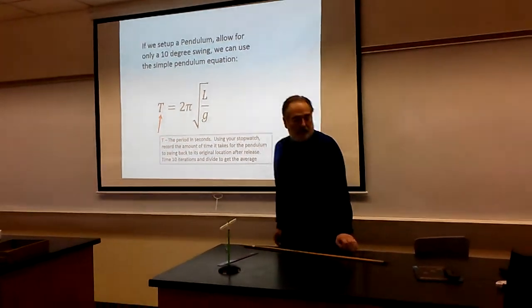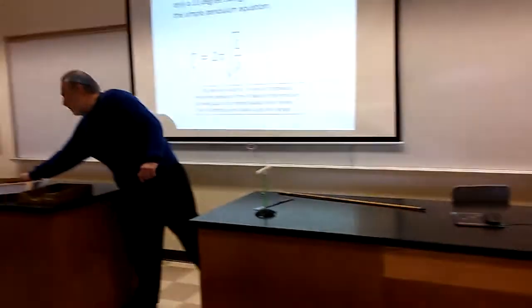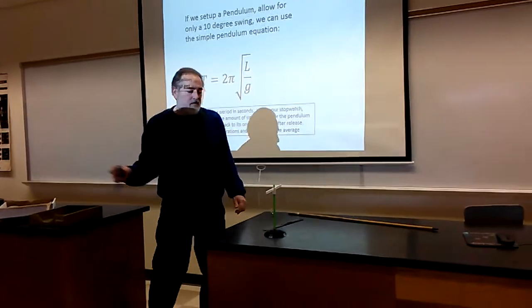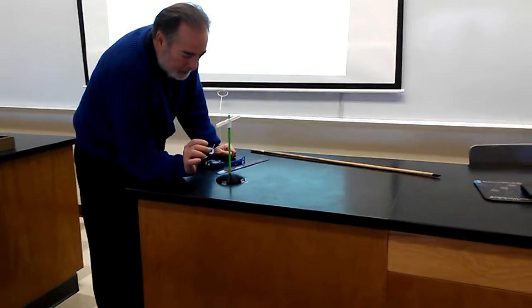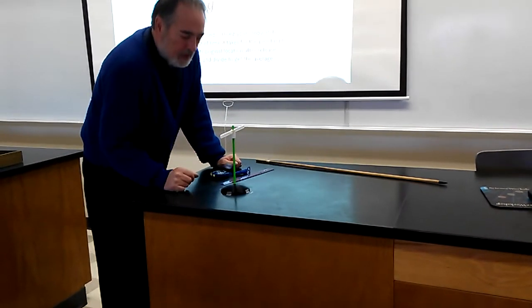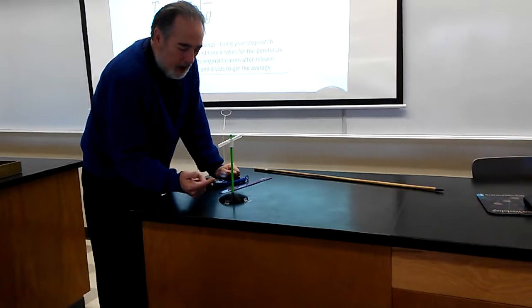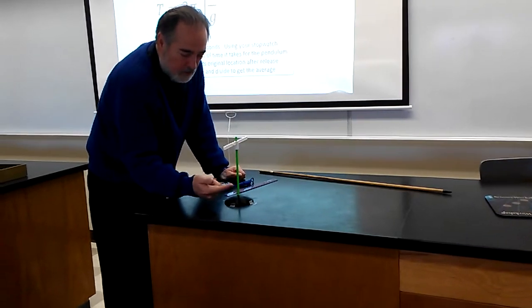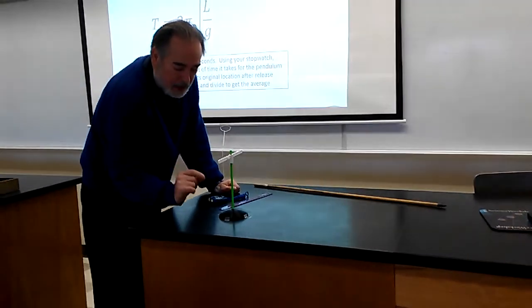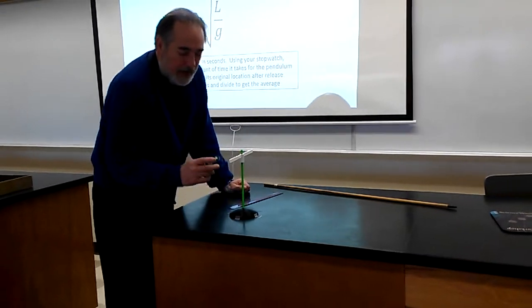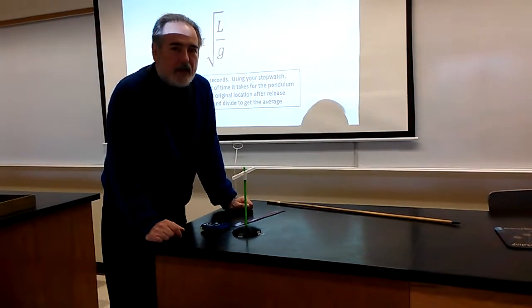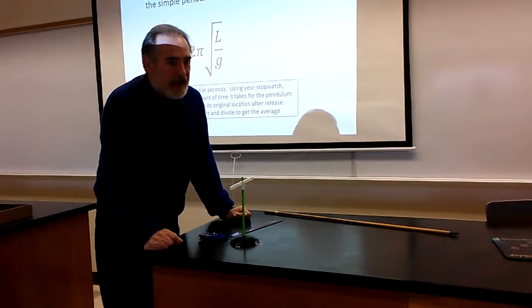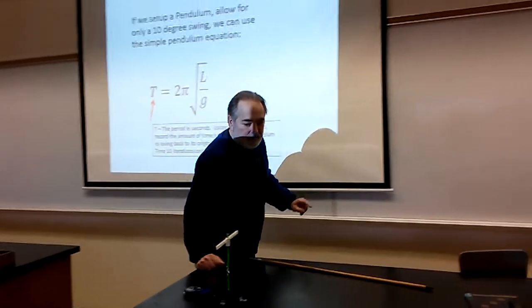So how do we do that? Well, we have in our kit a stopwatch. So I pull this back and I swing and time a period which is once over and once back, a tick and a tock together if you like, and I time that and let it go for 10 iterations and then divide by 10 to get the period in seconds.